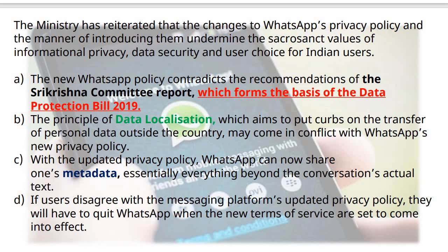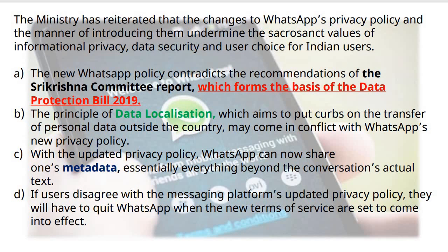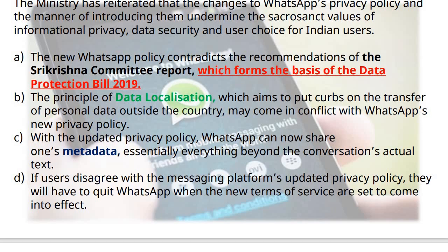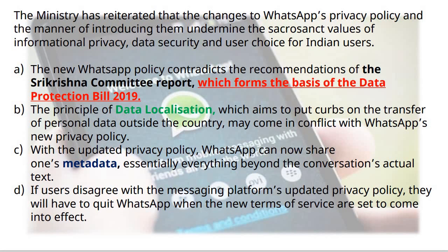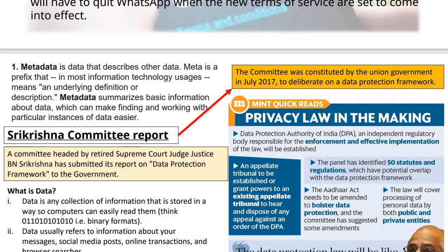The updated privacy policy now allows WhatsApp to share a person's metadata as well. Your actual text conversation is end-to-end encrypted, but beyond that, the data known as metadata can be shared. Metadata is the data that describes other data — it is a prefix. It conveys basic information about your data: from what location a text is coming, at what time it arrived, from which mobile it is coming, what is its IP address. These topics are all covered under metadata.